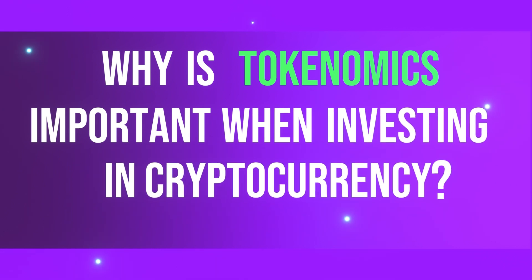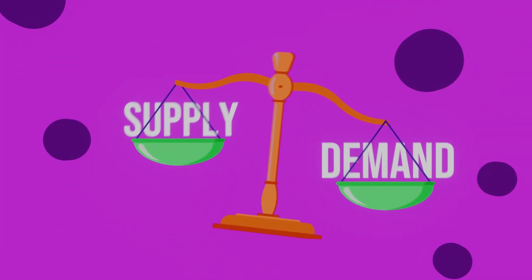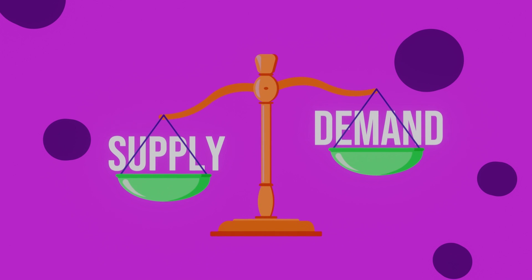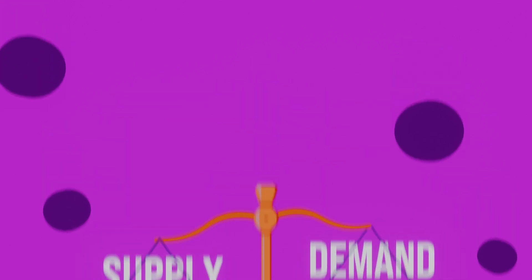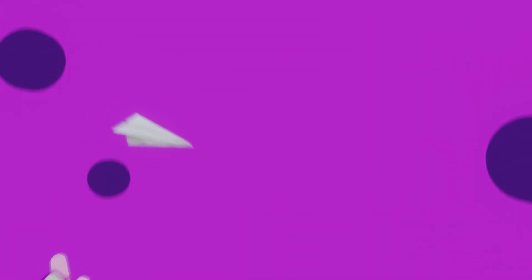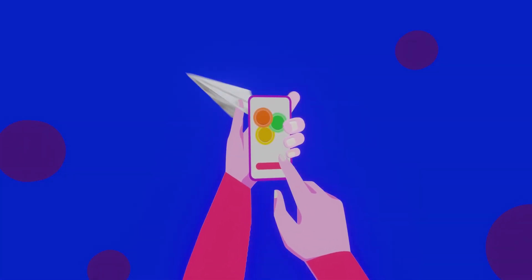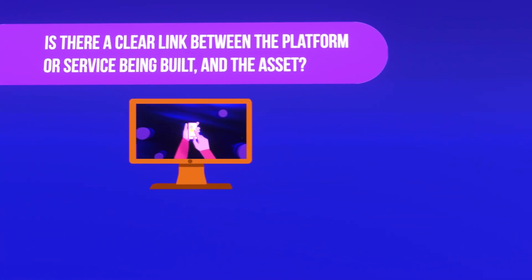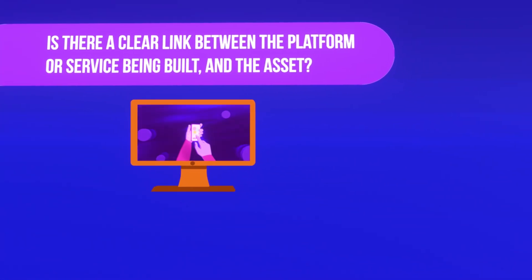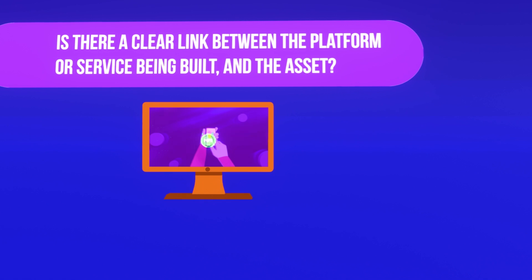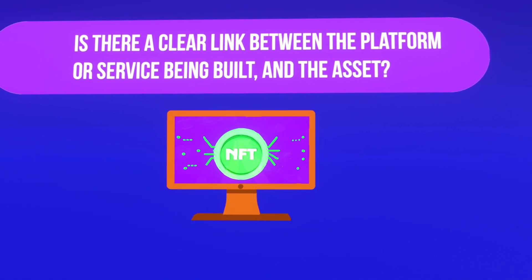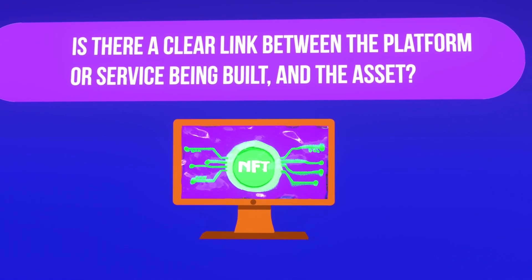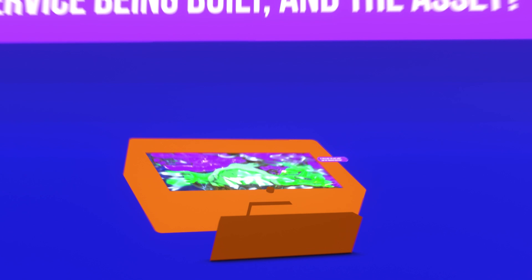So why is tokenomics important when investing in cryptocurrency? Understanding the factors that will impact either supply or demand is of vital importance to both speculators and investors. Perhaps the most important factor is to understand how the digital currency will be used. Is there a clear link between the platform or service being built and the asset itself? If so, there is a strong chance that a growing service will require purchases that increase usage and demand, thus increasing the price.